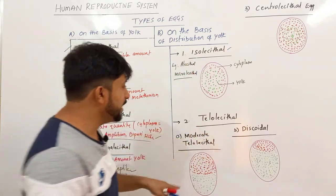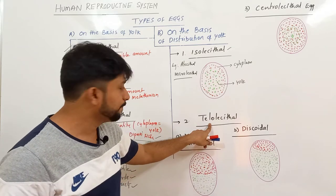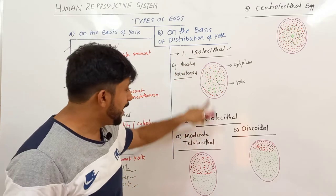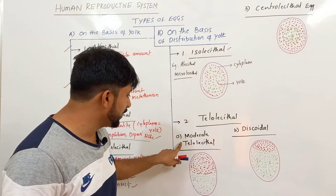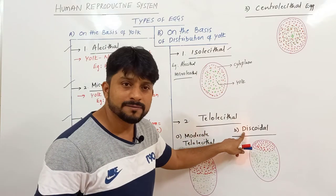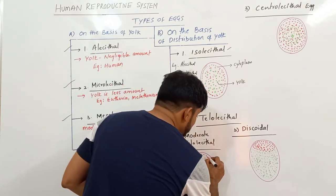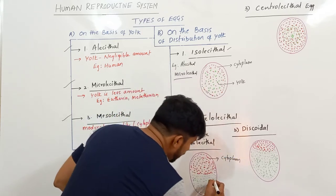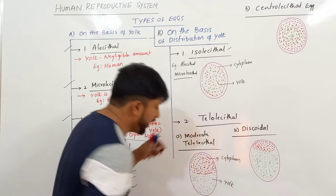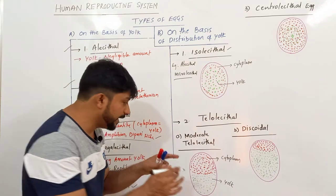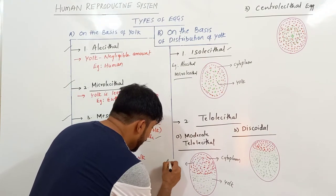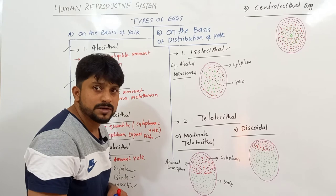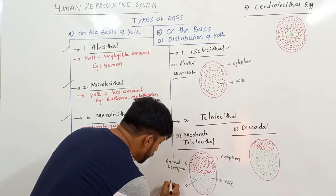If the yolk is unevenly distributed in the cytoplasm, it's called Telolecithal. In Telolecithal, there are moderate Telolecithal and discoidal types. In moderate Telolecithal, one side of the egg has cytoplasm and the other end has yolk. Where cytoplasm is concentrated, that part is known as the animal hemisphere, and where yolk is concentrated, that side is called the vegetal hemisphere.